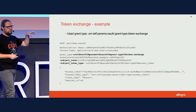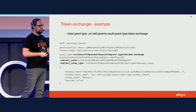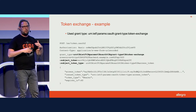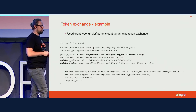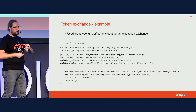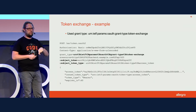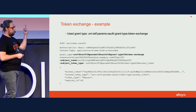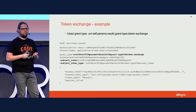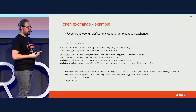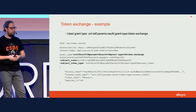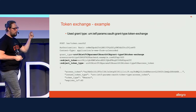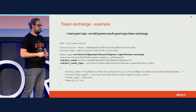You use this grant type to make a POST request to an endpoint, adding two parameters: a subject token and a subject token type. The subject token is the token of the original user and the type describes the kind of token. You can do token exchange in two ways: impersonation, where the resource server won't know you're actually another party, or delegation, where the token explicitly shows you're acting on behalf of another user. For delegation, you add two more parameters — actor token and actor token type — representing the user performing the exchange. You then get back a token to access the resources.